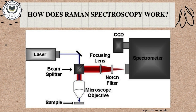After the laser light has irradiated the sample, the scattered light is passed through a filter to get rid of any light from the excitation laser. Then it is directed onto a grating, which distributes the inelastic parts like a prism according to wavelength. At the end, these rays are directed to a CCD sensor, which then outputs a spectrum depending on the intensity.